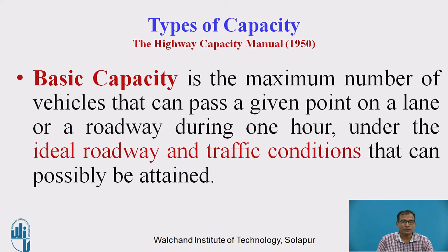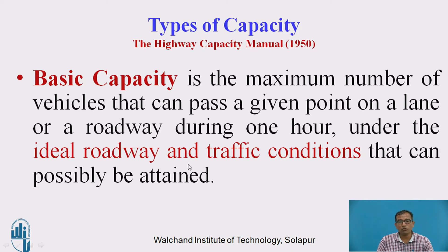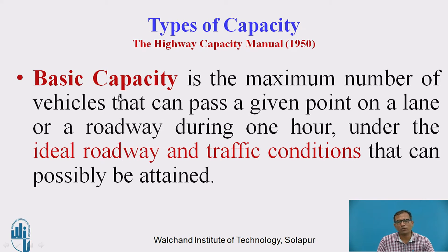We have three types of capacity. The first is basic capacity, as per the Highway Capacity Manual 1950. Basic capacity, also called theoretical capacity, is the maximum number of vehicles that can pass a given point on a lane or roadway during one hour under ideal roadway and traffic conditions. Ideal conditions — with no hindrance from other vehicles or traffic signals — are very difficult to achieve in the field, which is why it is called theoretical capacity.